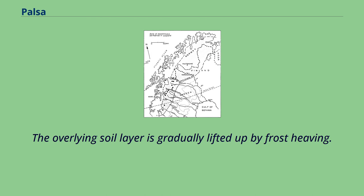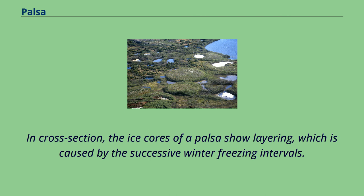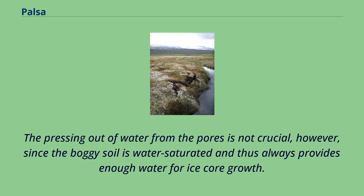Changes in surface moisture and vegetation will then be such as to preserve the newly formed permafrost. The overlying soil layer is gradually lifted up by frost heaving. In cross-section, the ice cores of a palsa show layering, which is caused by the successive winter freezing intervals. The pressing out of water from the pores is not crucial, however, since the boggy soil is water-saturated and thus always provides enough water for ice core growth.